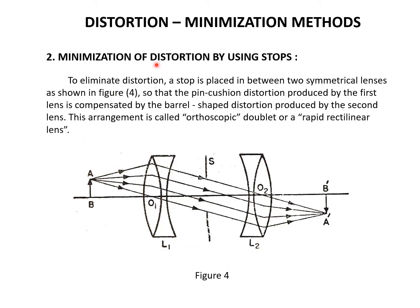Coming to minimization of distortion by using stops — to eliminate distortion, a stop is placed between two symmetrical lenses. Here, one concave lens is in contact with a convex lens, and similarly on the other side. These two lens pairs are arranged in an opposite manner such that the curved surfaces of the two concave lenses are facing each other, with a stop arranged in between these two lenses. By arranging the stops like this, one can minimize the distortion.